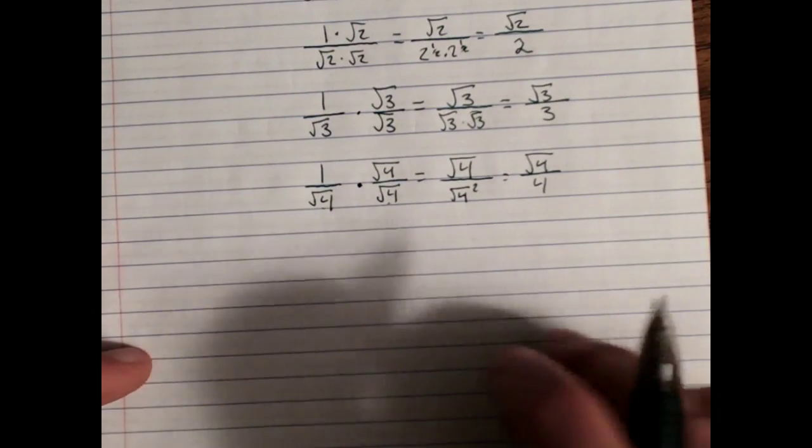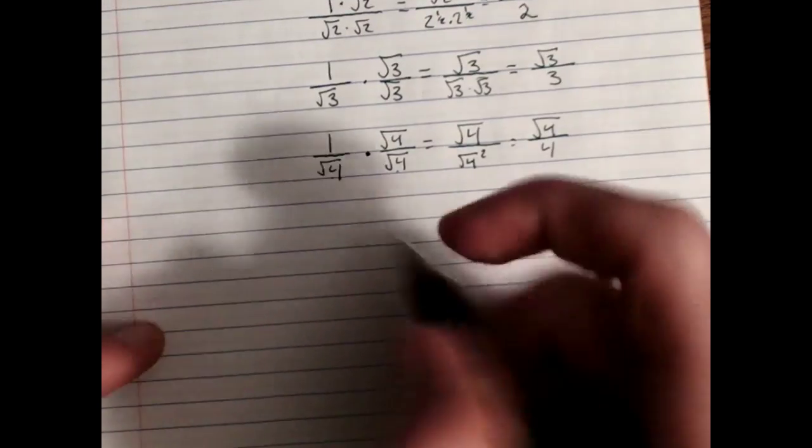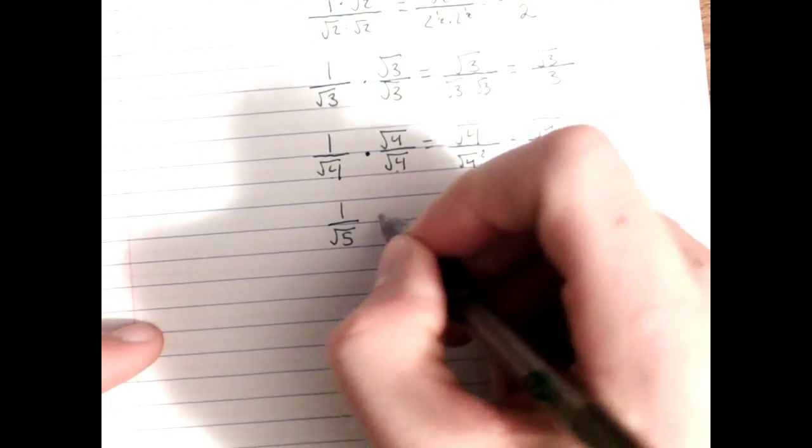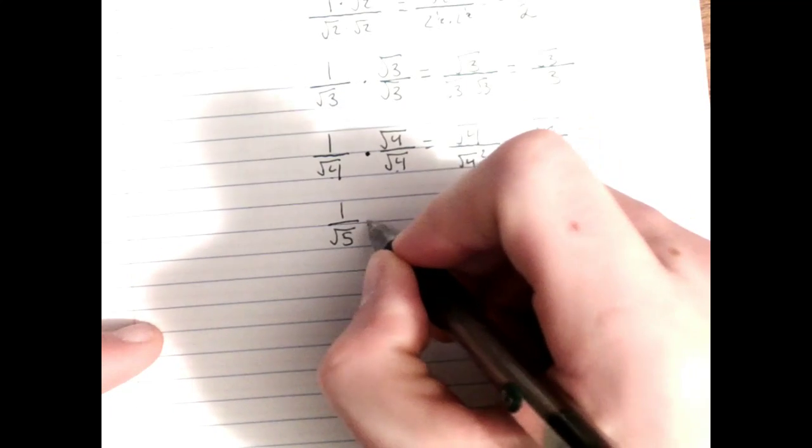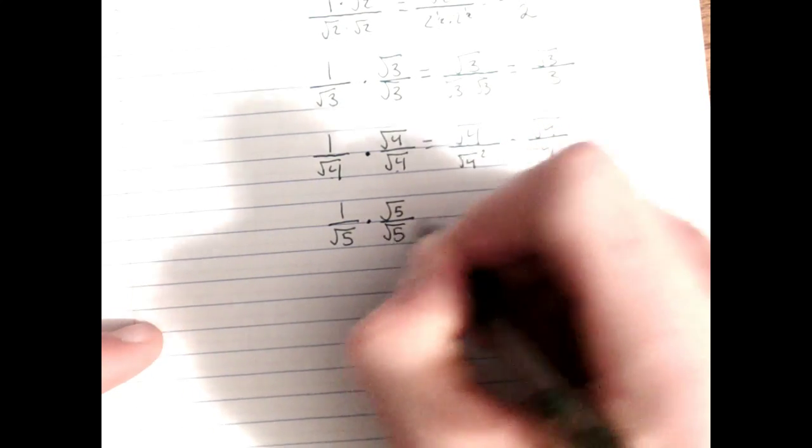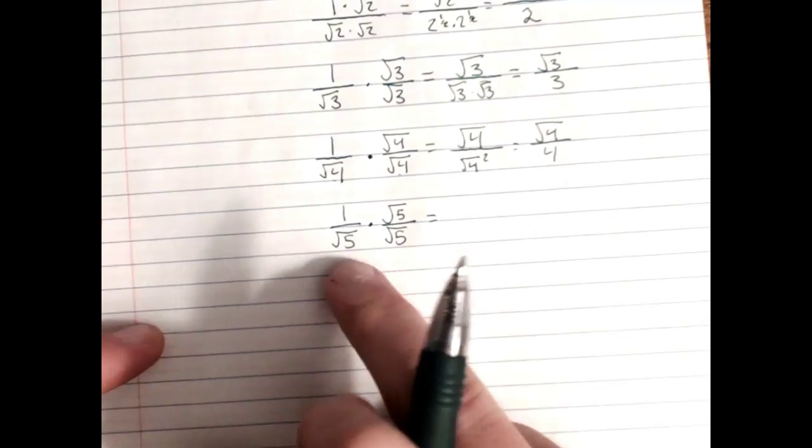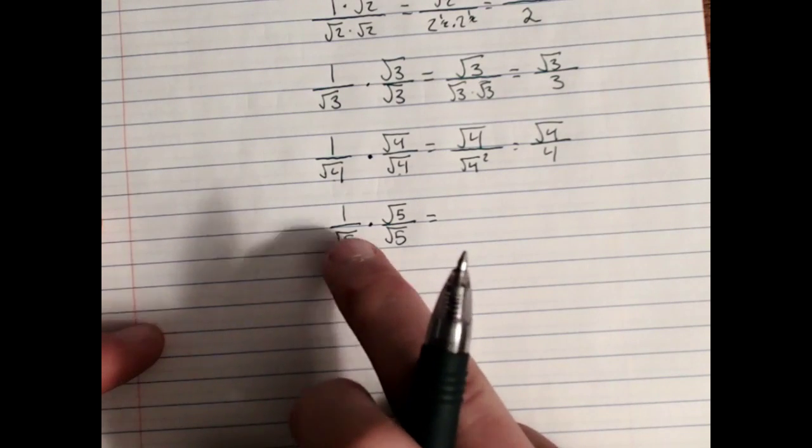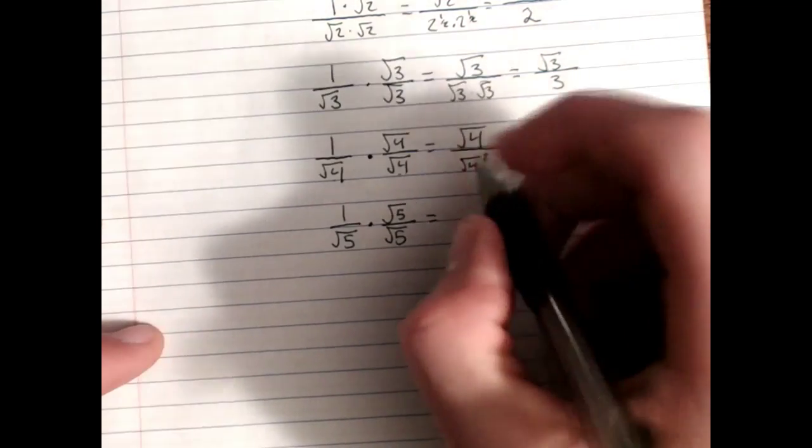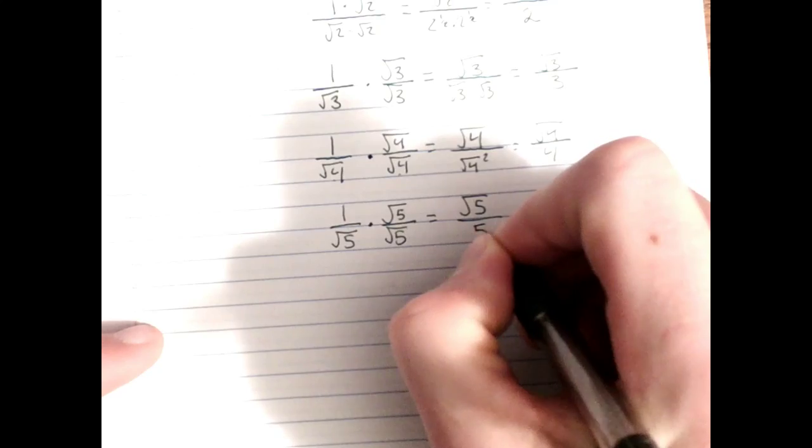One more simple one without any intermediary work. 1 over root 5. I want it simplified, so I'll multiply by root 5 over root 5. Whatever the denominator is, whatever the square root part of the denominator, that's what we'll multiply as numerator and denominator. And that gives me root 5 over 5.